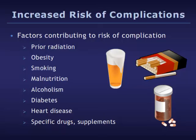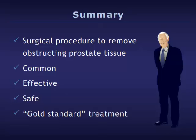The most important risk factor that might increase the risk of complications during or following TURP is prior radiation therapy, for example for prostate cancer. Other factors that may increase risk include obesity, smoking, poor diet, alcoholism, diabetes, heart problems, and certain drugs and supplements. It is very important that you inform your doctor of any medication you take and any health conditions you have. In summary, TURP is a surgical procedure used to remove obstructing prostate tissue, allowing urine to flow better and relieving bothersome urinary symptoms.